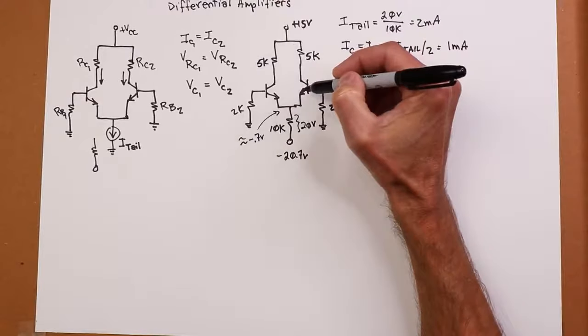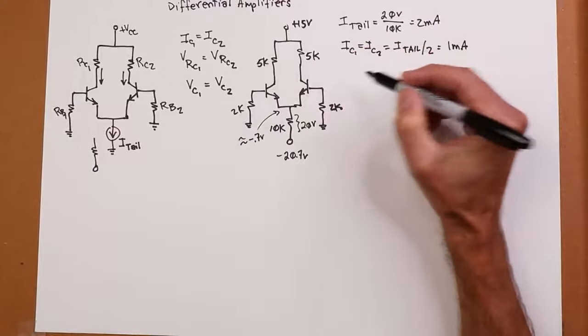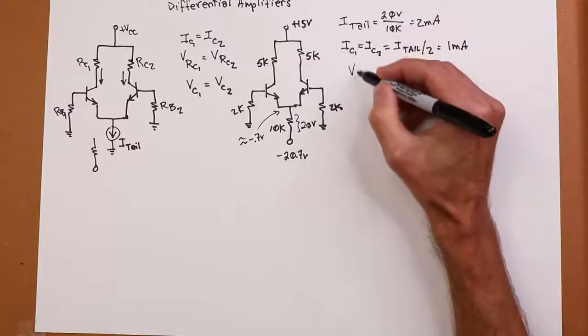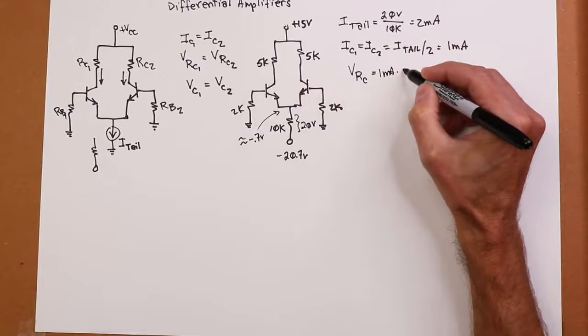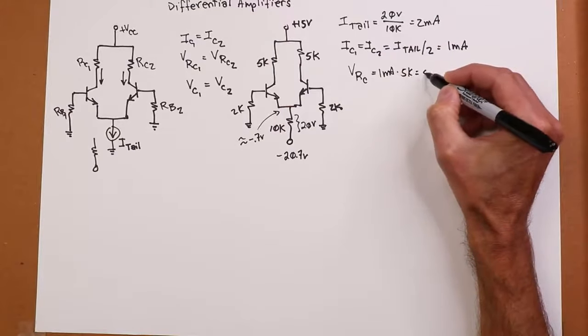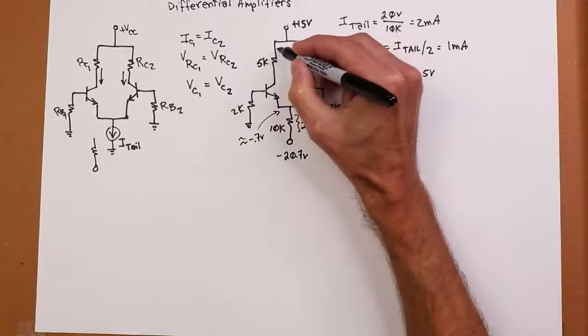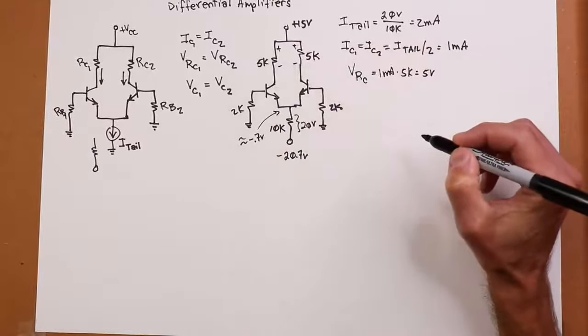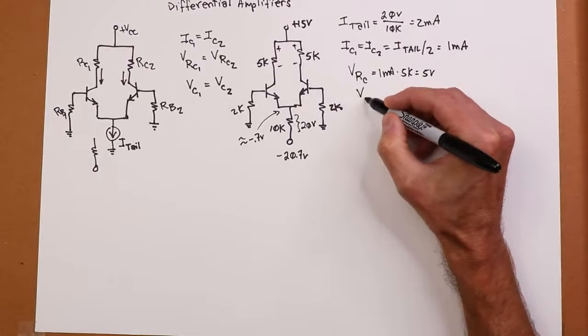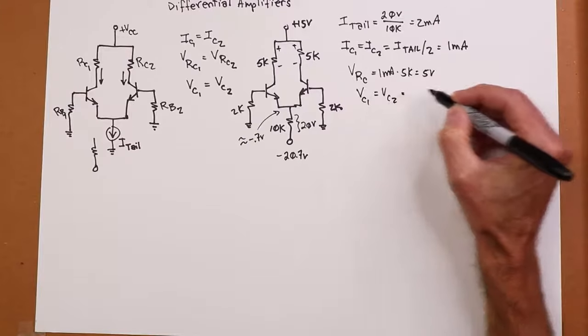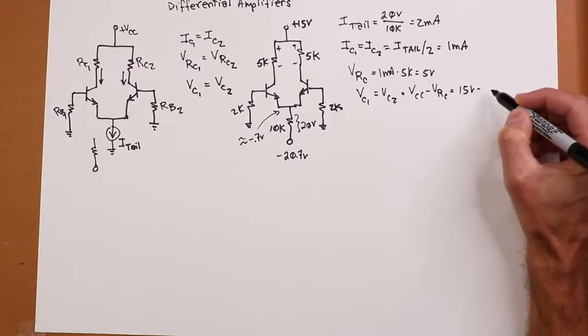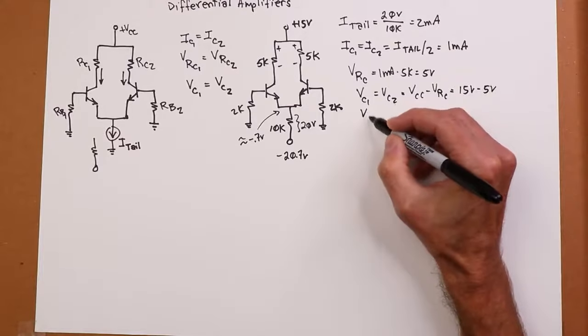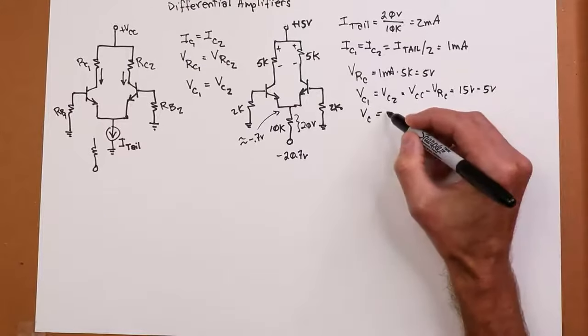So I've got a milliamp through here, got a milliamp down through here. So the voltage across each of these resistors, the voltage across generic RC, should be 1 mil times 5K or 5 volts. So that's the drop from here to here, or from here to here. That leaves our collectors, VC1 and VC2, would have to equal your power supply minus the drop on RC. In other words, 15 volts minus 5 volts, which is 10 volts.